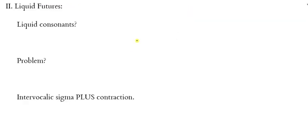In Roman numeral two, we have liquid futures, and this is what Mounts is calling pattern three. And I'm insisting it's not a pattern at all. But liquid futures do have some peculiarities that we need to take stock of. Let's talk about what liquid futures are. Liquid futures are verbs where the future tense stem ends with a liquid consonant. Liquid futures have future stems with a liquid consonant. The word liquid here is being used in a loose way. I'll explain what I mean in just a minute. What does Mounts label as liquid consonants?